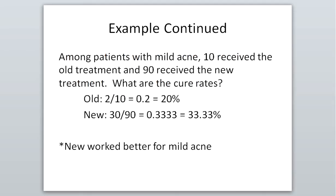Let's just look at the people with mild acne. We had 10 that received the old treatment and 90 that received the new treatment. For the old treatment, two were cured out of the 10, so that was a cure rate of 20 percent. With the new treatment, 30 were cured out of the 90 total, for a cure rate of 33.33 percent. So the new worked better for mild acne — with the new treatment 33 percent were cured and with the old treatment only 20 percent were cured.